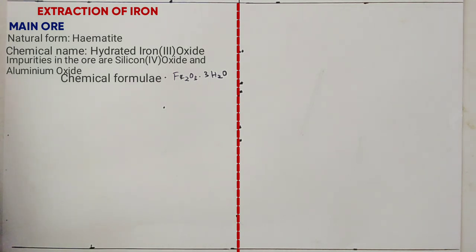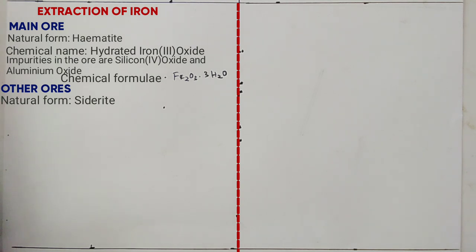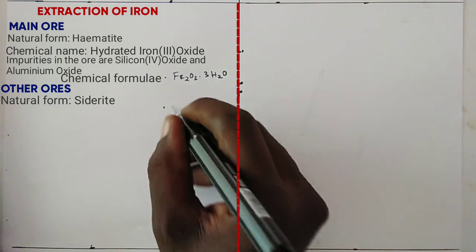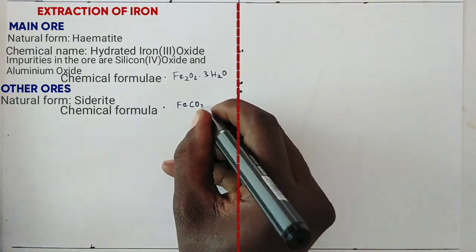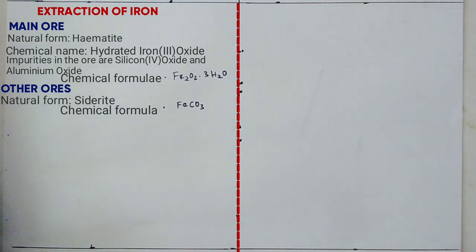The other ores include: in its natural form, siderite, whose chemical name is iron(II) carbonate. The last type of ore we can mention is magnetite, whose chemical name is iron(II) tetra oxide (Fe3O4).